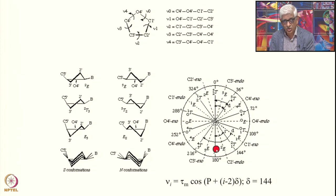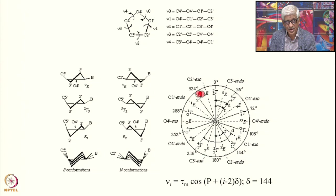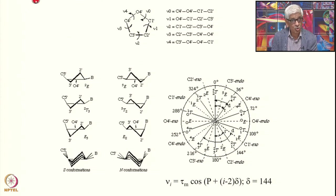Closer to P = 180, this is called C2' endo and you also have C3' exo. So P is an important parameter that determines the nature of the sugar ring, and the sugar ring conformation can vary from one nucleotide unit to the next.